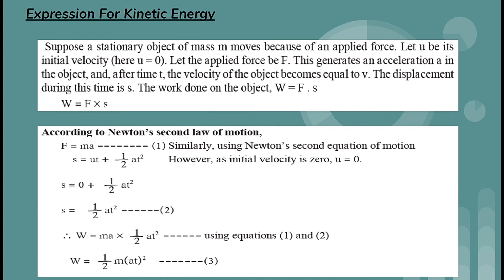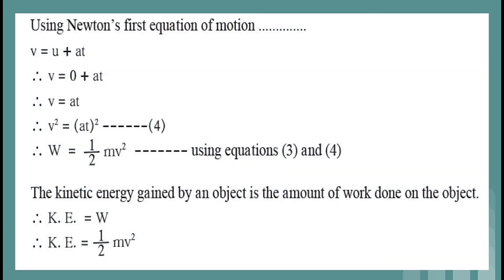Since initial velocity u = 0, displacement s = ½at². Therefore, work W = mass × acceleration × ½at² = ½m(at)².